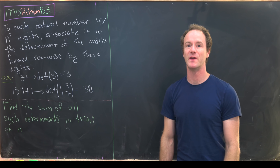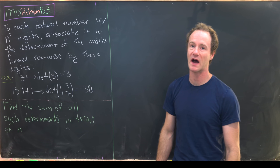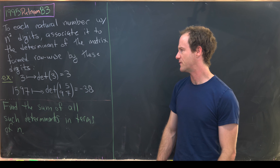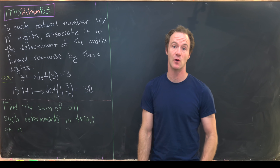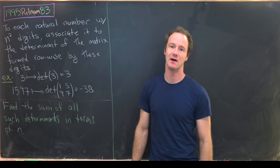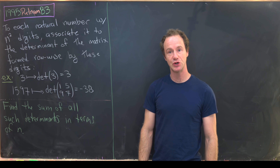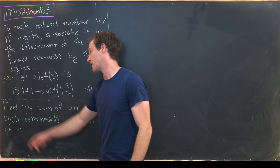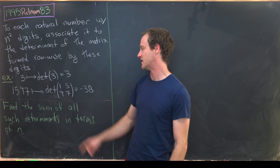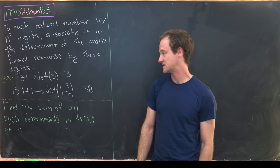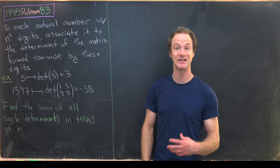To each natural number with n² digits, we want to associate it to the determinant of the matrix formed row-wise by these digits. If we've got a one-digit number, we associate it to the determinant of the 1×1 matrix formed by that number — that's just the number itself, so three turns into three. For a four-digit number like 1597, we associate that to the determinant of the matrix [1,5;9,7], which equals minus 38. Our final goal is to find the sum of all such determinants in terms of n.